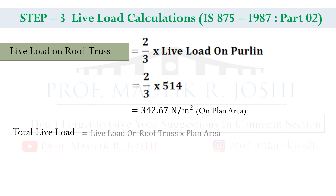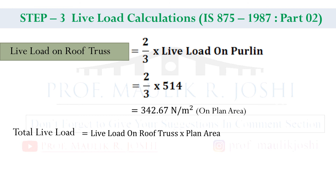Now we find the total live load for the roof truss. Total live load is equal to live load on roof truss multiplied by plan area. Since our value is in newton per meter square, we need to multiply by the plan area. Live load on roof truss is 342.67 and plan area is 30, so total live load comes to 10,280 newton (approximately 10,200 newton).